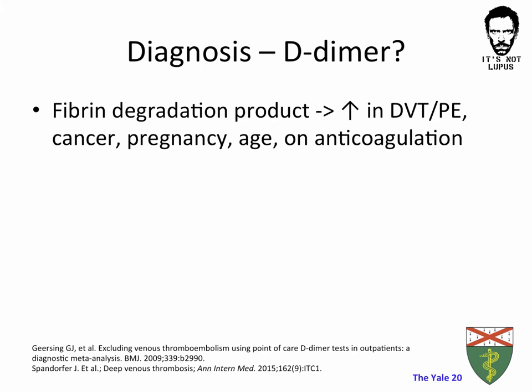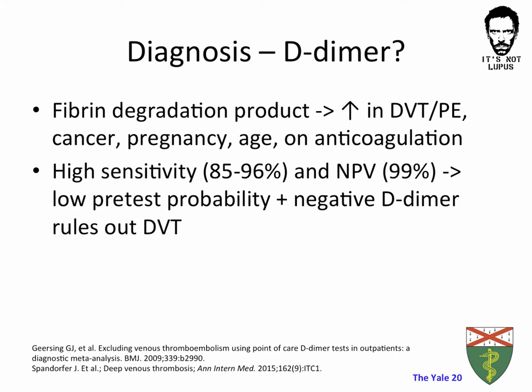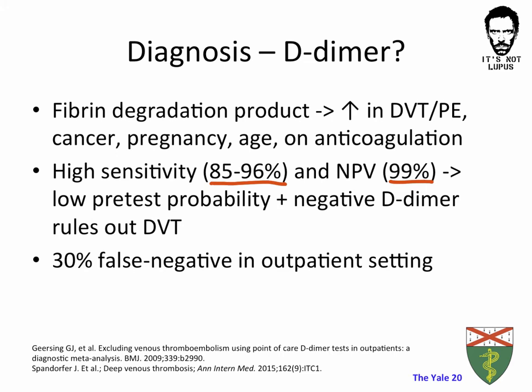How about D-dimer? D-dimer is basically a fibrin degradation product that is elevated not only in DVT and PE, but also in several other conditions like cancer, or physiological conditions like pregnancy or age. D-dimers have a high sensitivity and therefore a high negative predictive value. They are especially helpful if you have a low pre-test probability based on your Wells score for a DVT — if you then end up with a negative D-dimer, that basically rules out a DVT. But with a positive D-dimer you can't make a diagnosis. Also, in an outpatient setting where DVT is more of a chronic process, D-dimers can be false negative in about 30% of cases.